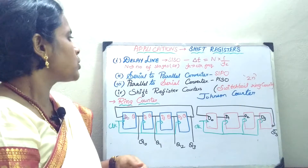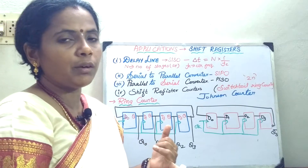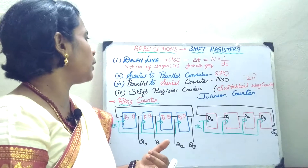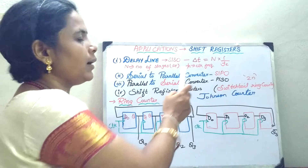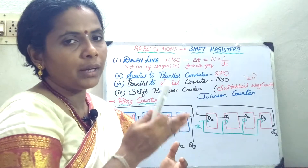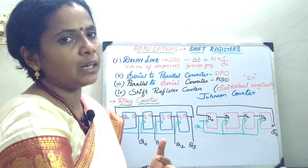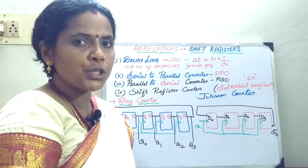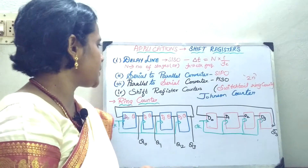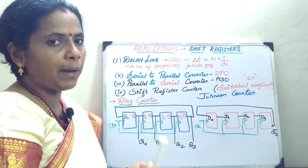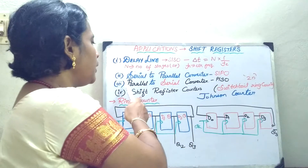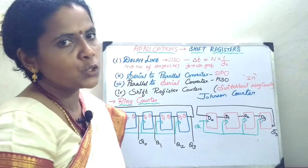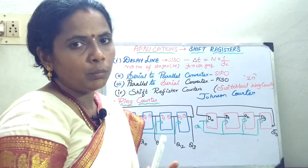Moving on to the second application: shift registers can be used for serial-to-parallel conversion. If I want to enter the data serially and send the data out in parallel, I can use the serial-in parallel-out shift register. The next case is if I want to enter the data in parallel and send it out serially, then for parallel-to-serial conversion, PISO will be a good tool.